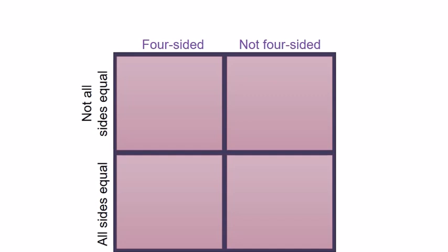Now there is another Carroll diagram here. It is just consist of 4 rectangles or square. The properties are 4-sided, not 4-sided, and then all sides equal and not all sides equal. Take a look at the first object or first shape. We have a square. Where does square belong to? Yes. It is 4-sided. At the same time, all sides equal.